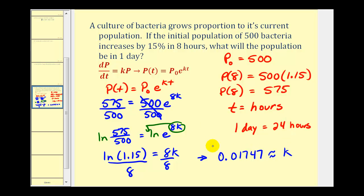Which means for this situation the function would be P of t equals 500 times e raised to the power of 0.01747 times t, where t is the time in hours. So now that we have this, we can determine what the population would be after one day or 24 hours. Let's do that on the next slide.